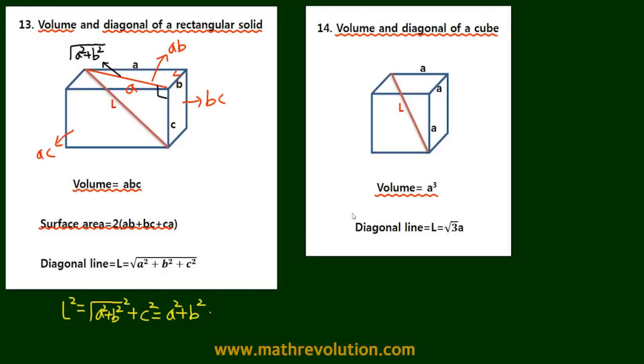So L is the square root of a squared plus b squared plus c squared.